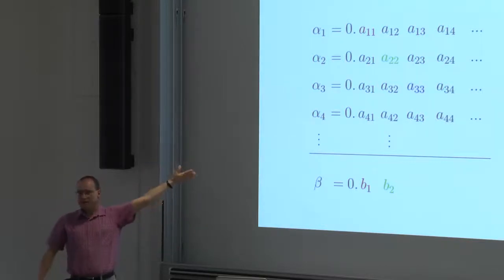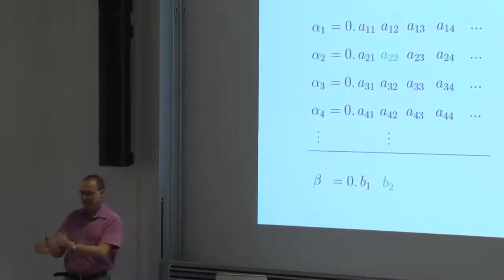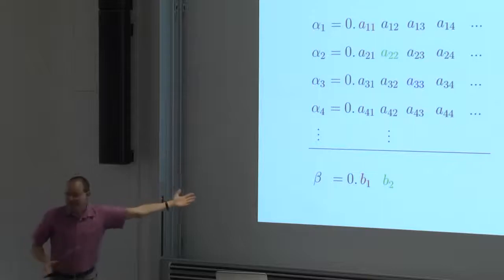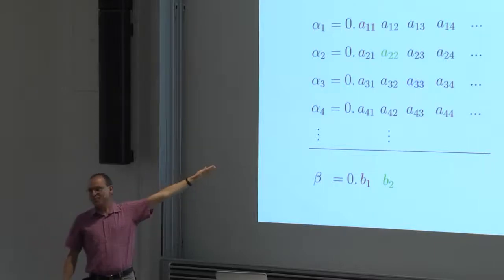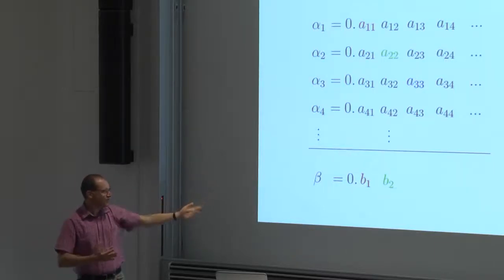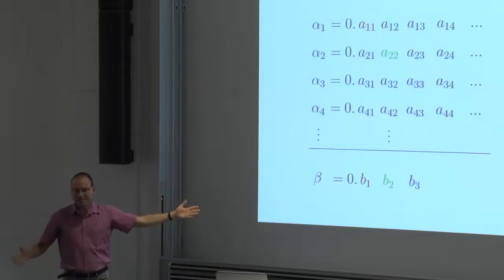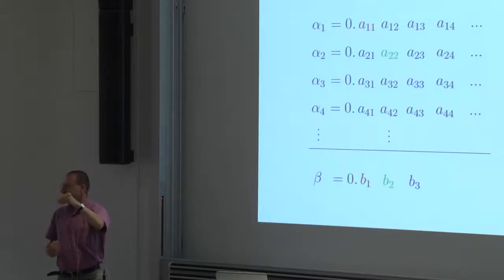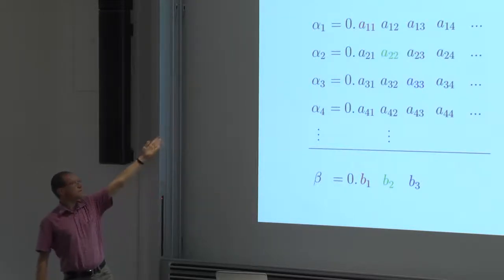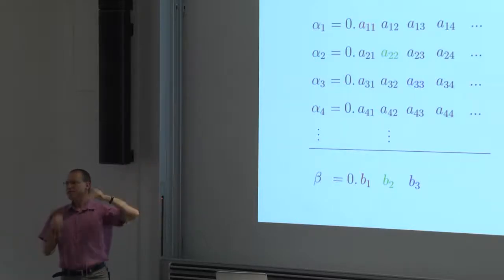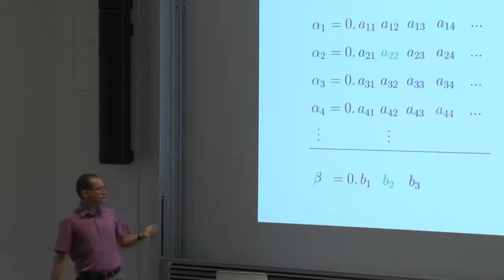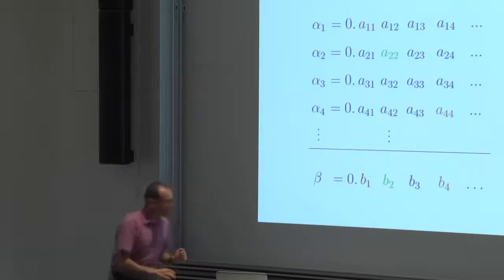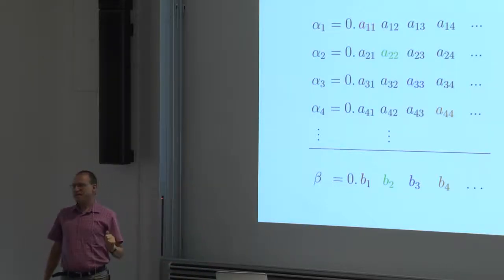Then we look at the third digit of alpha 3 — A33. Whatever it is, I choose B3 to be any digit different from A33. So beta and alpha 3 differ in their third digit. Remember all of these are digits — 0 through 9, there are 10 choices for each. If there are 10 choices for A11 I have 9 left for B1. Then we choose B4 to be anything different from A44, and so on.